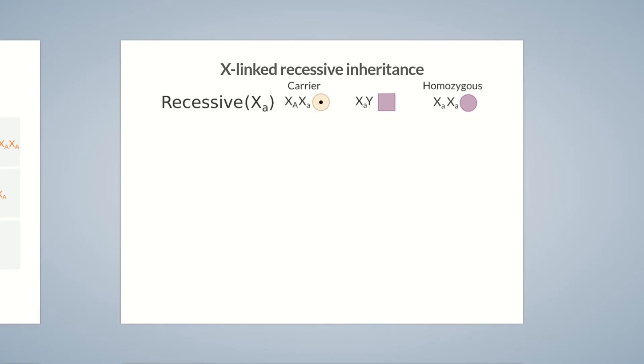Males possessing the recessive allele always express the trait because there's no genetic material on the Y-chromosome to compensate for a recessive allele on the X-chromosome. To illustrate this, carriers of the genotype Big AY and Little AY are called hemizygotes. All daughters of a carrier mother have a 50% chance of being a carrier themselves, whereas each son has a 50% chance of being affected.